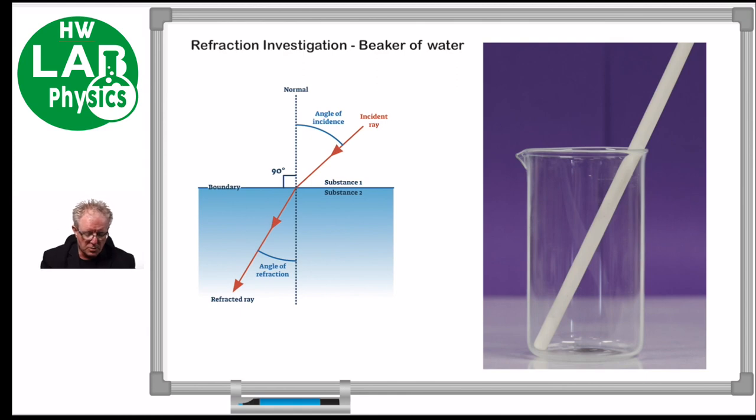We can see we've got a light ray coming in. We know that's called the incident ray. Remember, we said that the incident ray is incident, or coming into a boundary. We have our boundary here, which is between substance one - in this case, it's going to be air - and substance two, which is water.